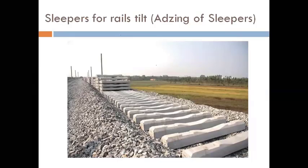Next is edging of sleepers. If you are going to tilt the rails, you must provide something beneath them so that they get tilted. Either you shape the sleeper in such a way that placing a rail on it gives a tilt of 1 in 20. When the same 1 in 20 slope is provided to the sleeper, it is called edging of sleepers.